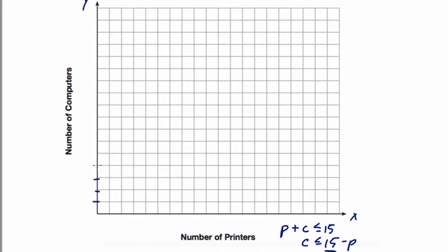So 1, 2, 3, 4, 5, 6, 7, 8, 9, 10, 11, 12, 13, 14, 15. That's our starting point. That's our y-intercept. We start at 15.